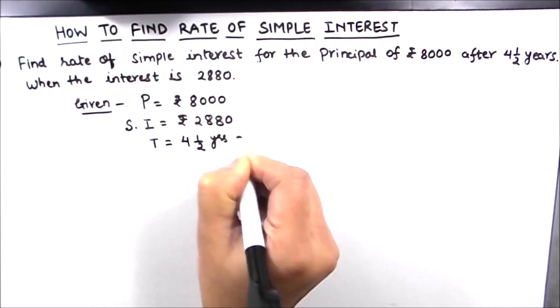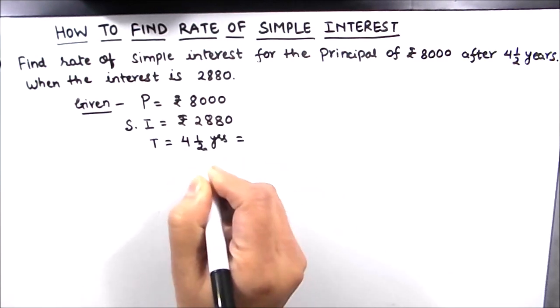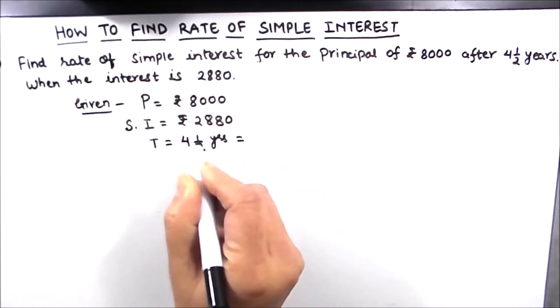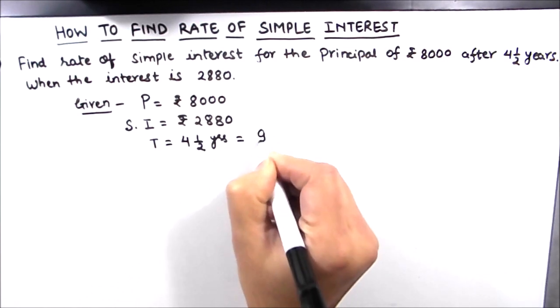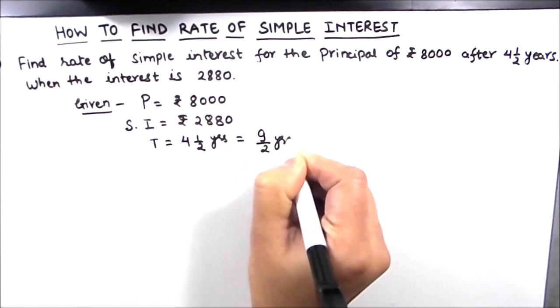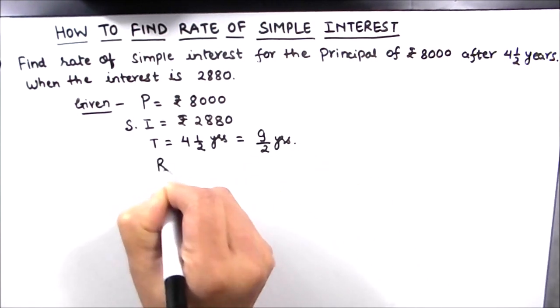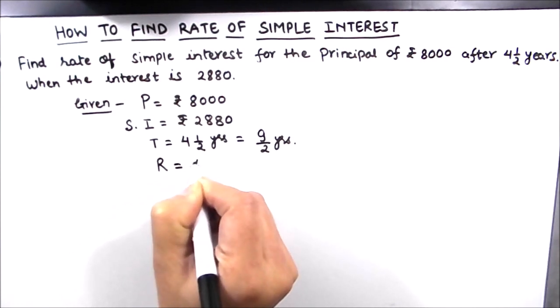We can write four and a half years as 9 by 2 years. The rate of interest is what we need to find out.